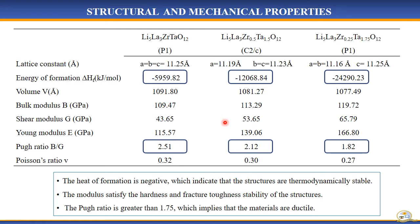The structural and mechanical property calculations were performed to evaluate the stability of the structures for their use as active solid-state electrolytes. From the table, it shows that the lattice constant decreases with an increase in Tantalum concentration. This is because Tantalum has a lower ionic radius compared to zirconium. Also, the elastic modulus satisfies the hardness and fracture toughness stability of electrolytes. The Pugh's ratio is greater than 1.75, which indicates that the materials are ductile.